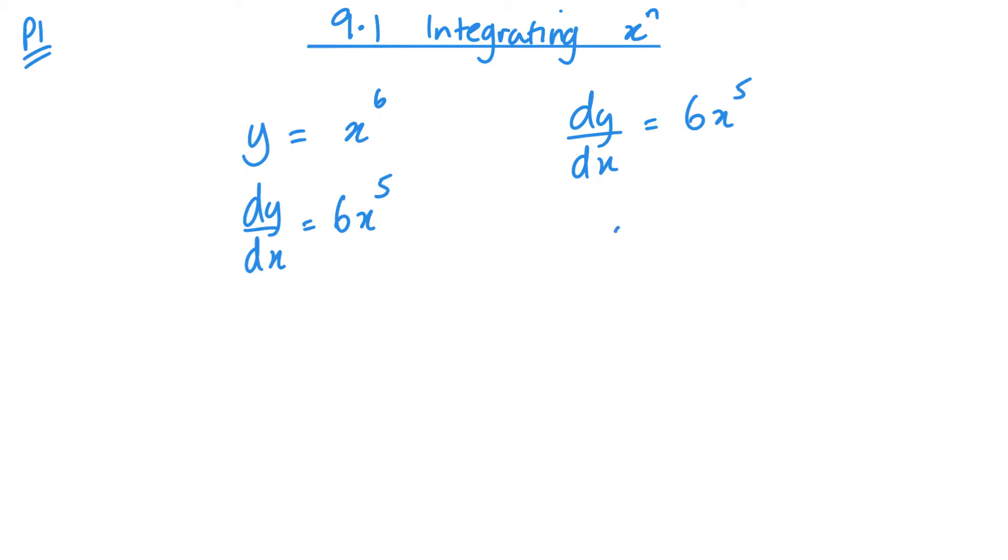So, to integrate something, I will add one to the power, it becomes 6, and divide by my new power. And what you can see is that differentiating goes this way, integrating then goes backwards. Okay, so in terms of algebra, if I start off and I differentiate, I multiply by my power and take one away from my power. And this is differentiating.